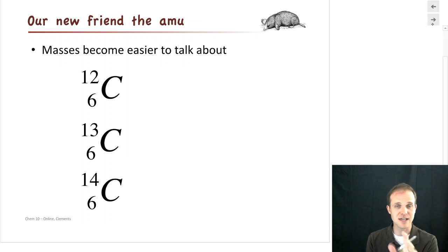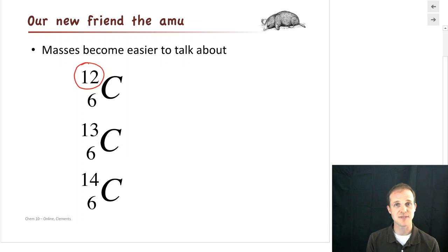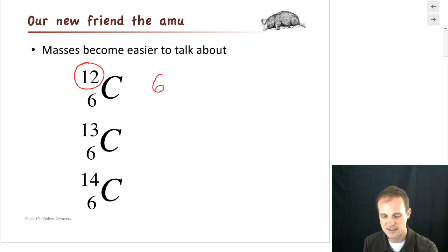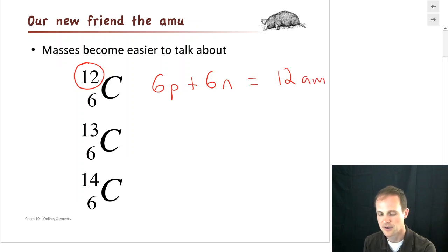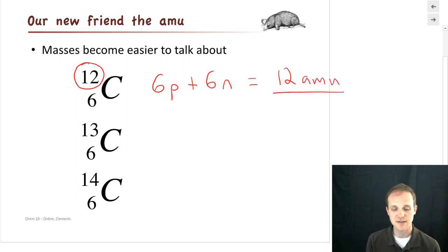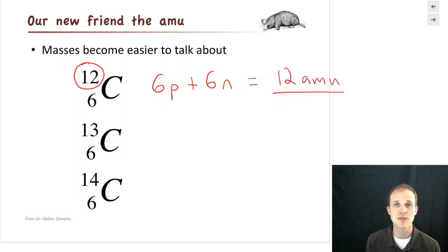So how do we talk about the masses of things? For small atoms, it works out pretty well that the mass number becomes the mass of that atom. Carbon-12 has 6 protons, and 12 minus 6 gives 6 neutrons — each one weighs 1 AMU, so we have a total of 12 AMU worth of stuff in there. An individual atom of carbon-12 weighs 12 AMU.